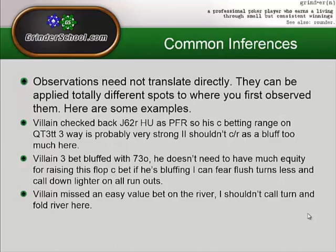Secondly: villain three-bet bluffed with Seven-Three offsuit. He doesn't need much equity for raising a flop c-bet if he's bluffing. We've seen him three-bet pre-flop with 7-3o, which shows he doesn't think about selectability of hands — he's just randomly choosing a hand and spot to bluff with. This means post-flop he doesn't necessarily need draws or semi-bluffs to raise the flop; he can basically do it with any two cards because he feels like bluffing. Therefore when the flush card comes on the turn I don't need to be as wary of it — I don't need to put him on a flush as often.